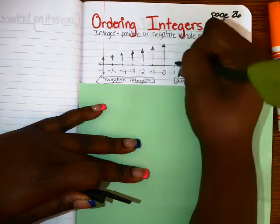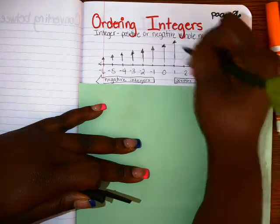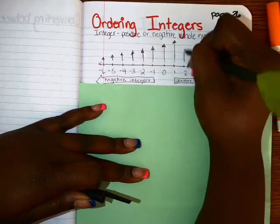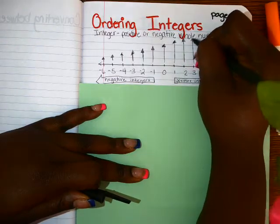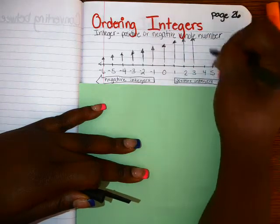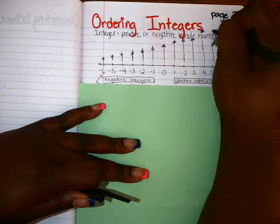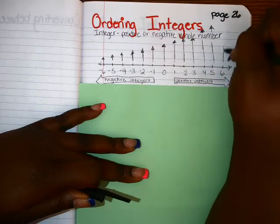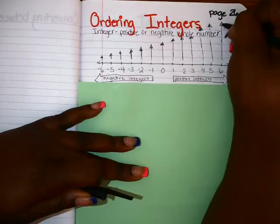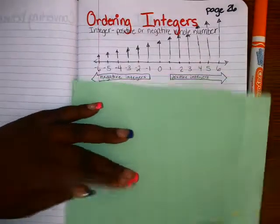If you notice, zero is greater than all negative integers. As you can tell, the number line just keeps increasing and it goes forever. And on my number line, six is the biggest — it's the greatest.